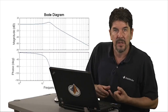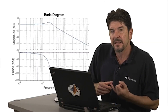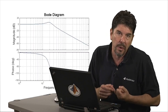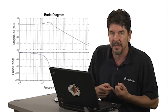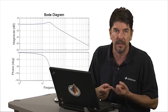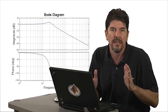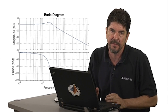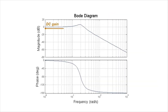Before proceeding, I want to define some of the standard terminology we will be using for describing the characteristics of our frequency response plot, just to make sure we're all on the same page. First, when we talk about DC gain, we are referring to the magnitude gain at zero frequency, or DC. Next, roll-off rate refers to the slope at which the magnitude drops off at high frequency.